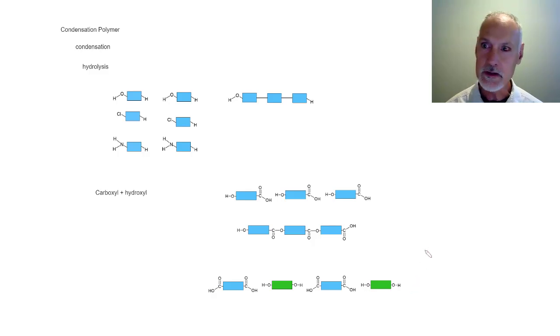In our previous program, we took a look at something called addition polymerization. Here we're going to look at a second method of making polymers through what's called condensation. So let's start off with the idea. Condensation is the removal of a small molecule such as water to form bonds.